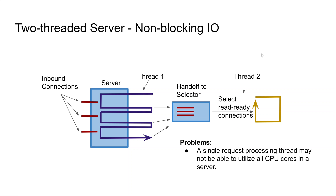Java has a non-blocking IO API where the API does not block the thread trying to read or write data to and from sockets. A single thread can check one connection for data, and if nothing is available the read method returns immediately so the thread can continue to the second and third connections. This means a single thread is capable of reading data from more than one connection concurrently — not at the exact same time, but since data arrives with some delay from each connection, a single thread can process data from multiple connections.